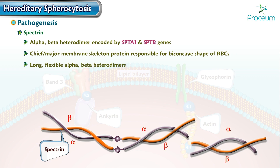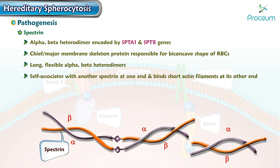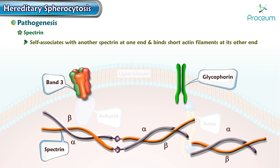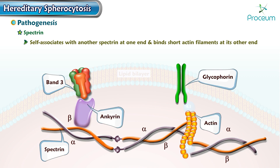Spectrin itself associates with another spectrin at one end and binds short actin filaments at the other end. This connection creates a two-dimensional meshwork that is connected to the transmembrane proteins band 3 and glycophorin via the linker proteins ankyrin, band 4.2, and band 4.1.